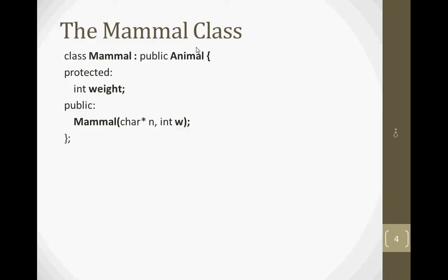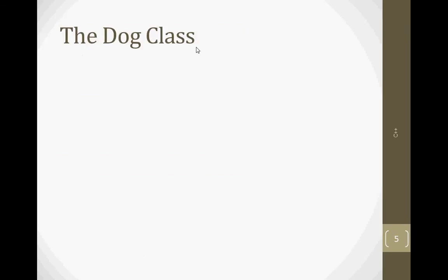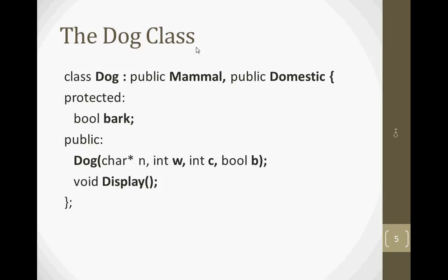Class Mammal uses public level inheritance from Animal. There is a weight data member and Mammal class has a constructor. Now, Domestic class also has a constructor. Dog is a class that is inheriting from Mammal and Domestic. Dog has one data member: a bark attribute. The Dog class constructor and display method are in the public section.